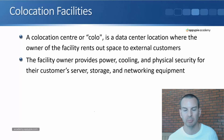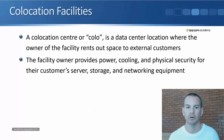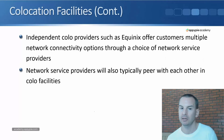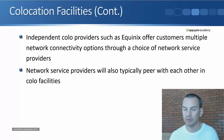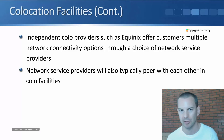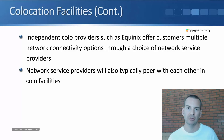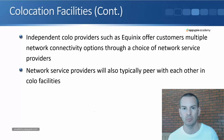The facility owner provides the power, the cooling, and physical security. The customer will put their own servers, storage, and networking equipment into the facility. Independent colo providers, such as Equinix, offer customers multiple network connectivity options through a choice of network service providers that have connections coming into the facility. Those network service providers will also typically peer with each other in those colo facilities. Your big network service providers like Verizon and AT&T will have connections coming into the colos and they also peer in there — that's actually how network connectivity works across the internet.